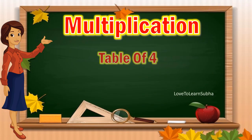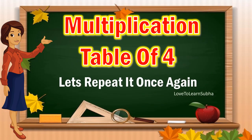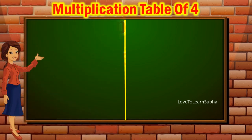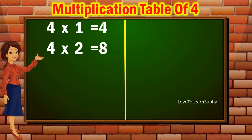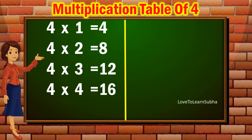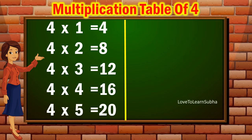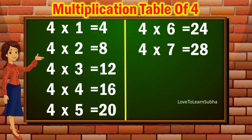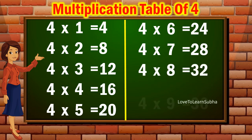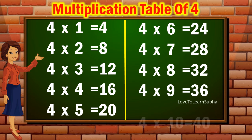Now, let's repeat it once again. 4 ones are 4. 4 twos are 8. 4 threes are 12. 4 fours are 16. 4 fives are 20. 4 sixes are 24. 4 sevens are 28. 4 eights are 32. 4 nines are 36. 4 tens are 40.